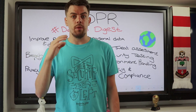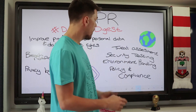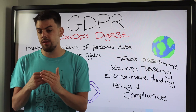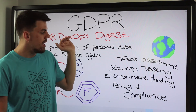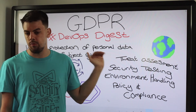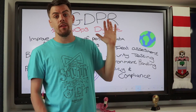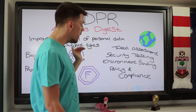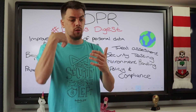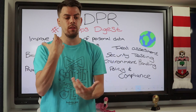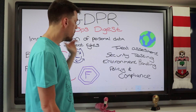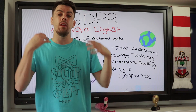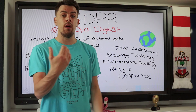Sonatype's Nexus platform can help in four main areas: threat assessment, security testing, environment handling, and policy and compliance. For threat assessment, we can evaluate the risk of any third-party components you've been using. Security testing helps establish release gates mentioned in GDPR articles and supports automation. Environment handling identifies critical security upgrades that need to be quickly implemented as patches. And policy and compliance lets us put in policies within the SDLC lifecycle to stop implementing bad known components and those which are out of date or need patching.